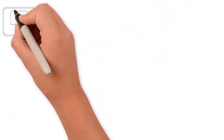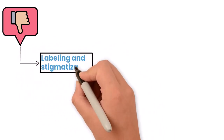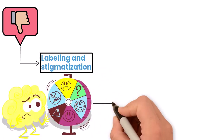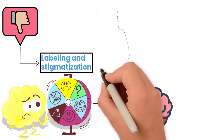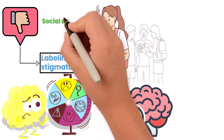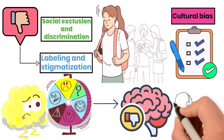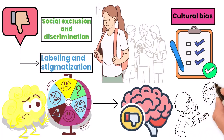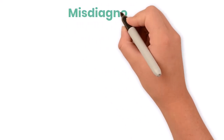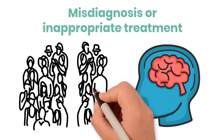Despite its strengths, abnormal psychology faces criticism. One major criticism is the potential for labeling and stigmatization. Diagnosing individuals with mental health conditions can lead to labels that carry negative connotations. This stigmatization can affect how individuals view themselves and how they are perceived by others, potentially leading to social exclusion and discrimination. Another criticism is the cultural bias present in some diagnostic criteria. Mental health conditions and behaviors are often defined based on Western norms, which may not be applicable to individuals from different cultural backgrounds. This cultural bias can lead to misdiagnosis or inappropriate treatment, as the symptoms and expressions of mental health conditions can vary significantly across cultures.